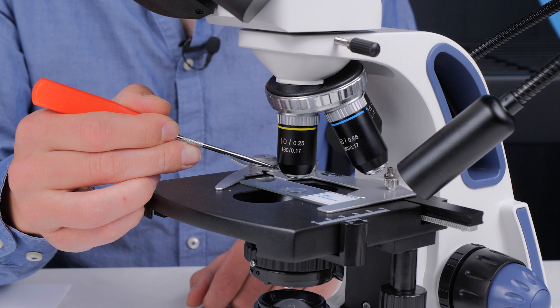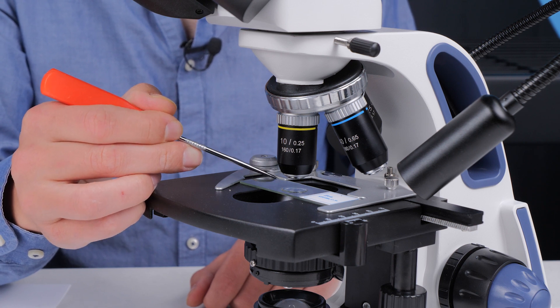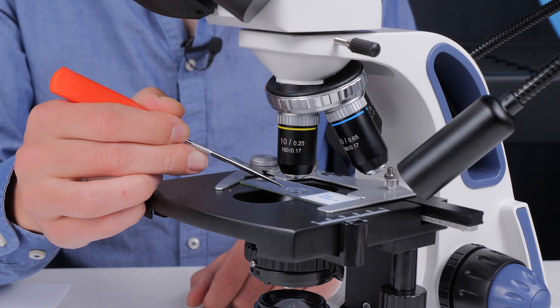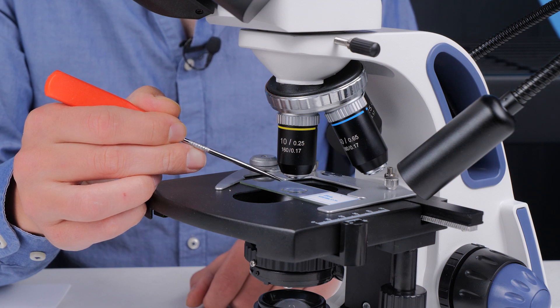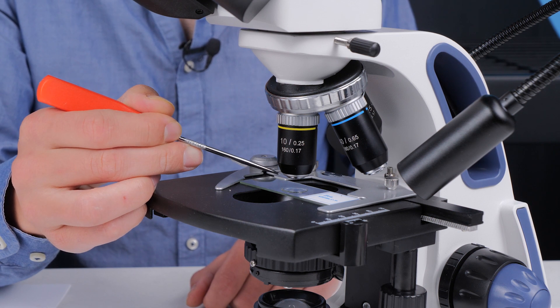In between the top of the cover slip and the bottom of the objective is a bunch of air. And because there is air at the boundary between the glass and the air, and then the air and the glass at the bottom of the objective,